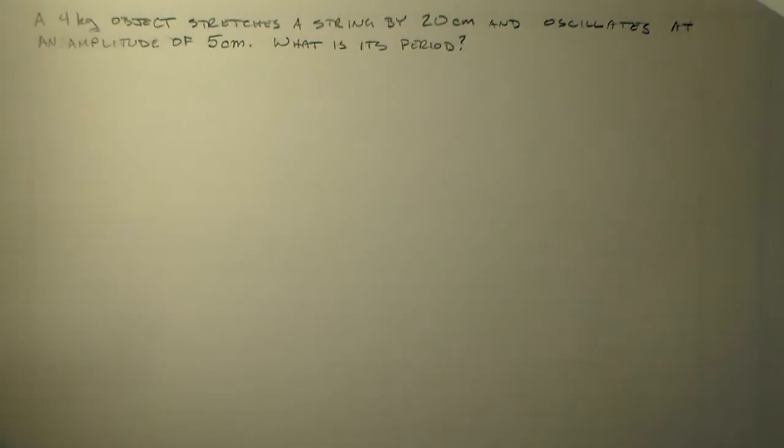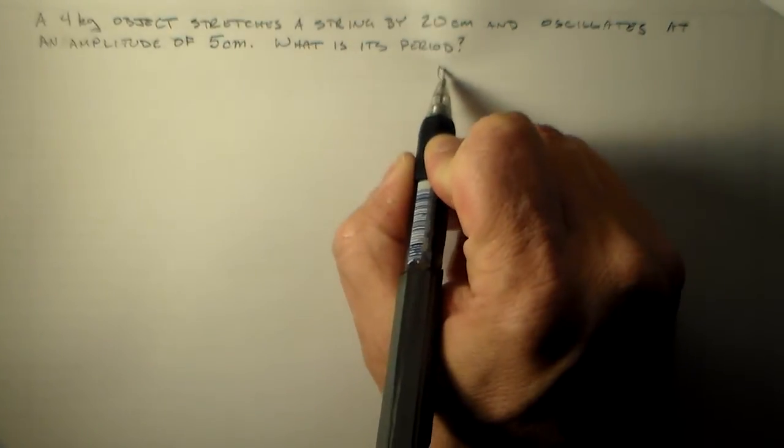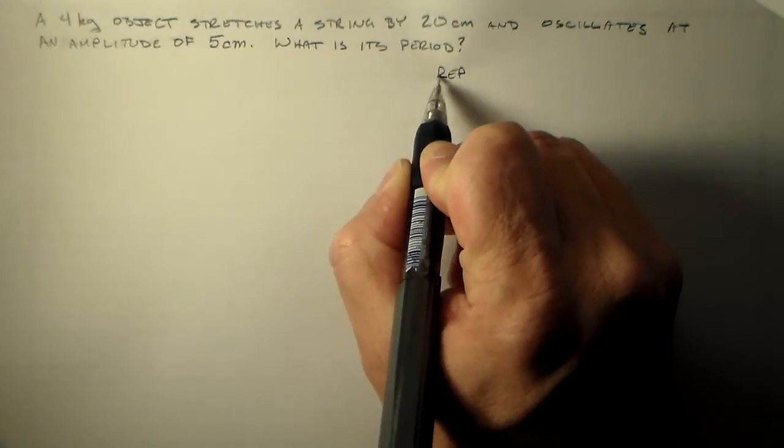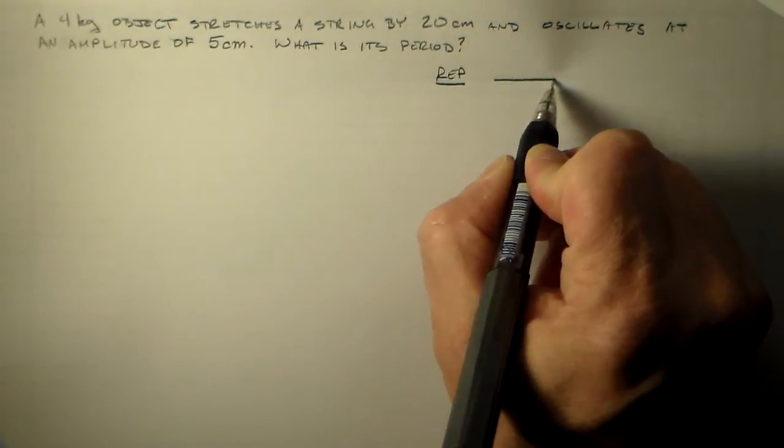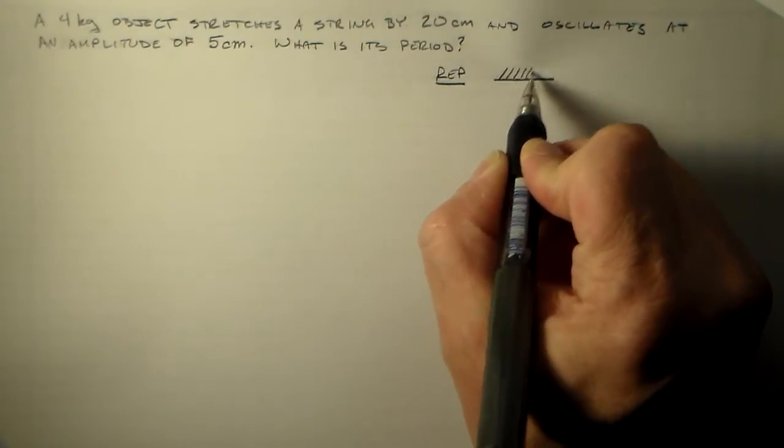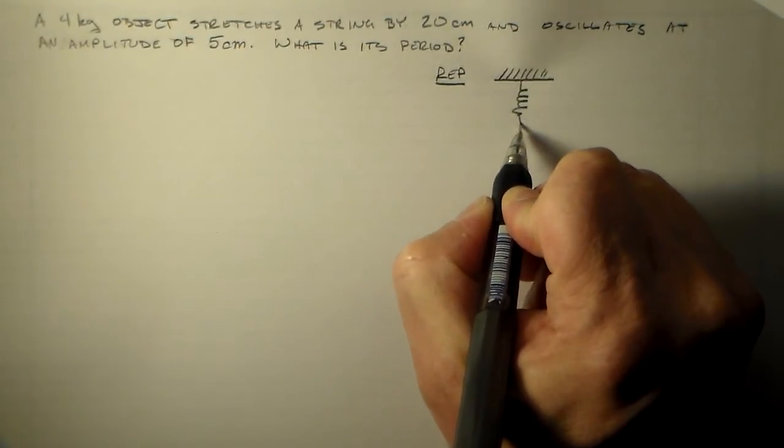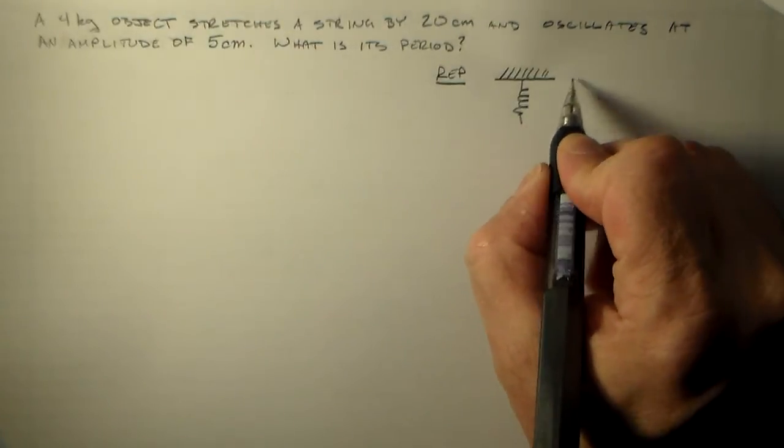Okay, I'd like to look at a nice simple problem here. It's an oscillation problem. In this case, what do I have? I have a mass on a spring. So I've got this spring here, it's like that.